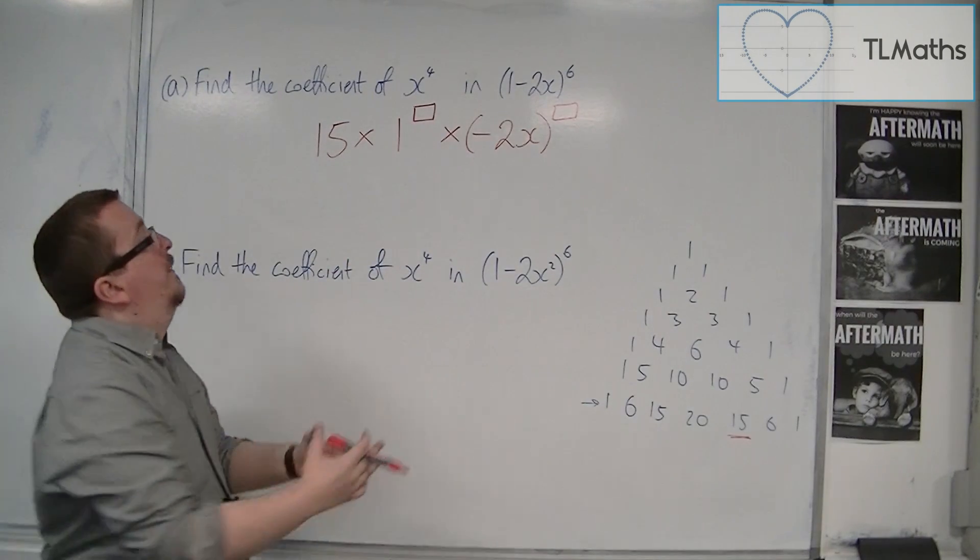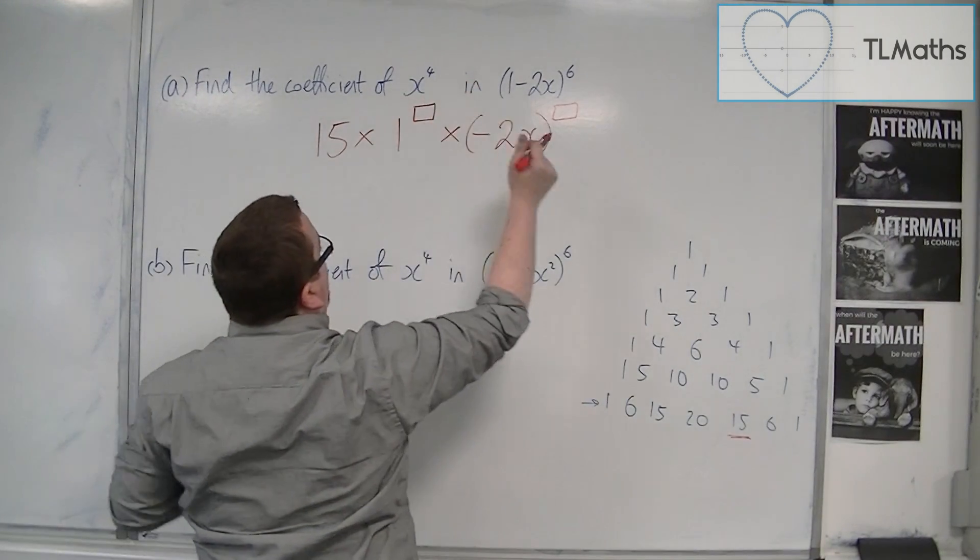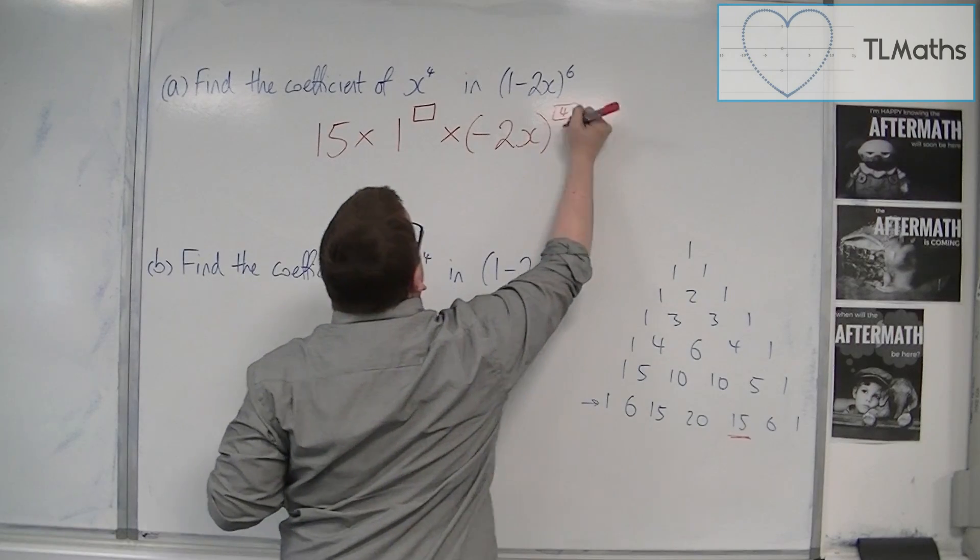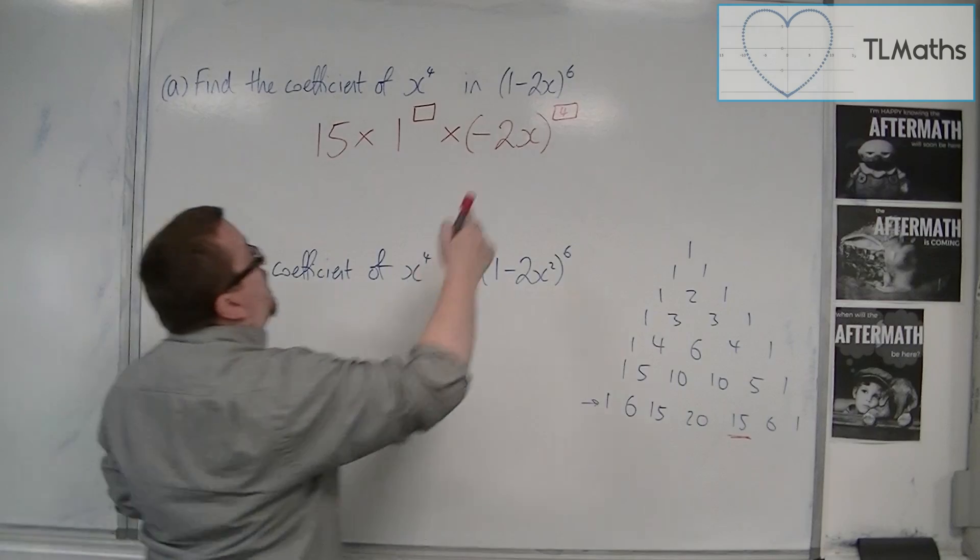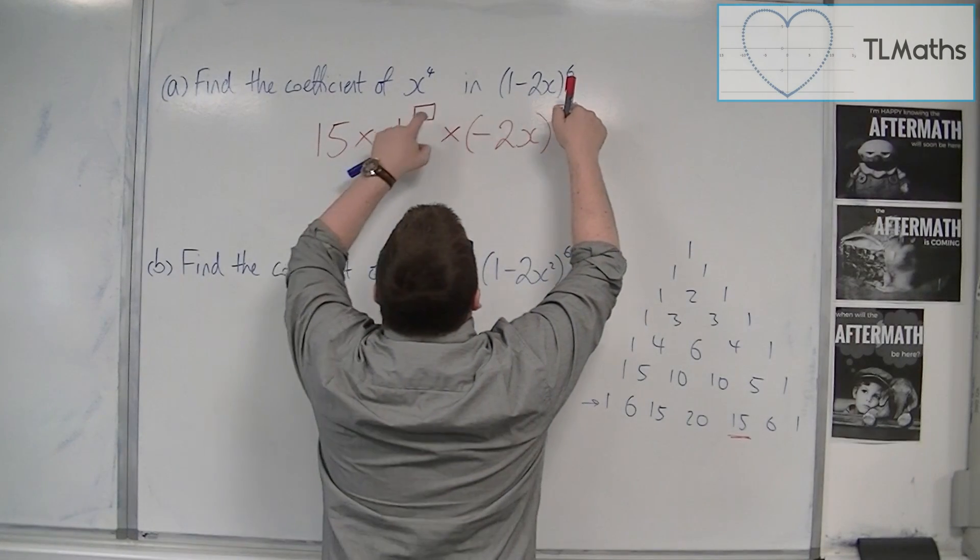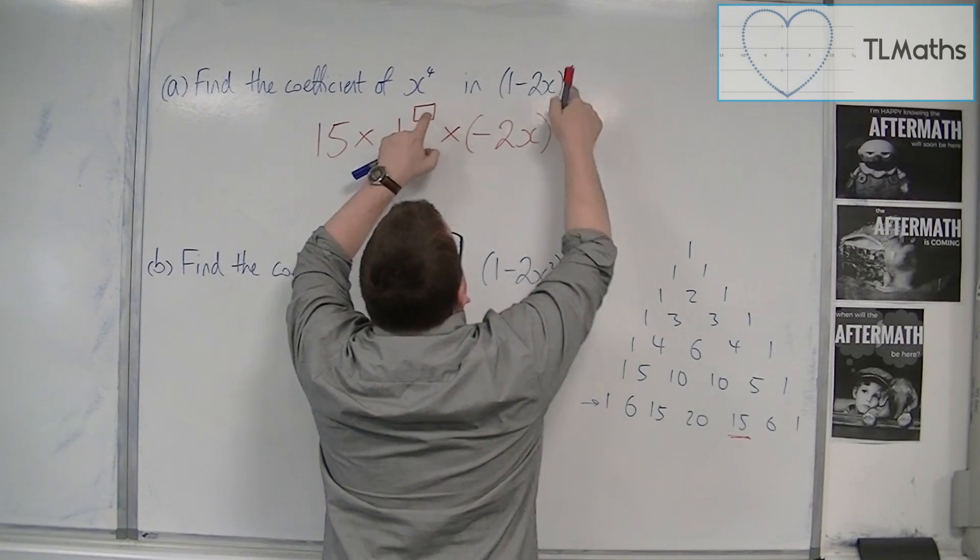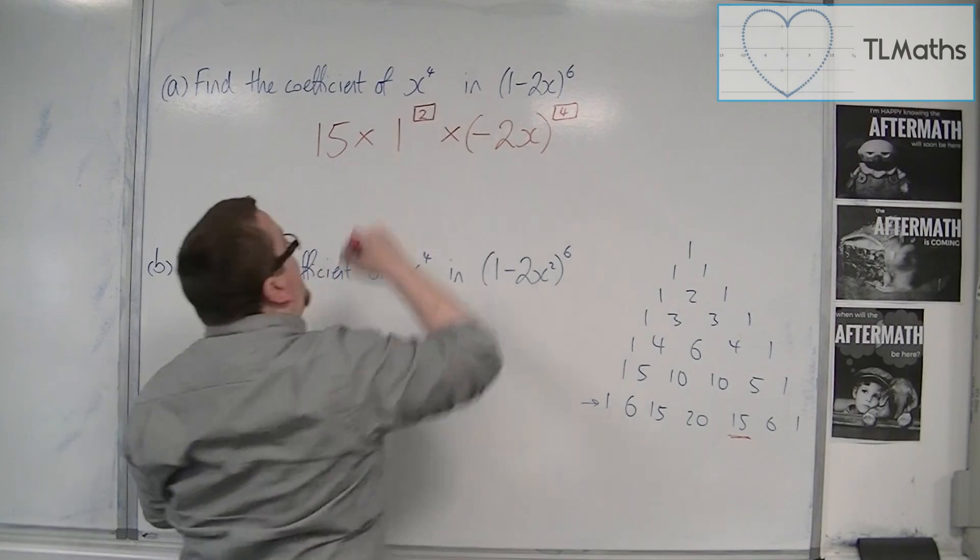Now because I want x to the 4, this has to be 4 in order for me to get an x to the 4. So if that's a 4, then I know that these two numbers must add up to 6, and so that's got to be 2.